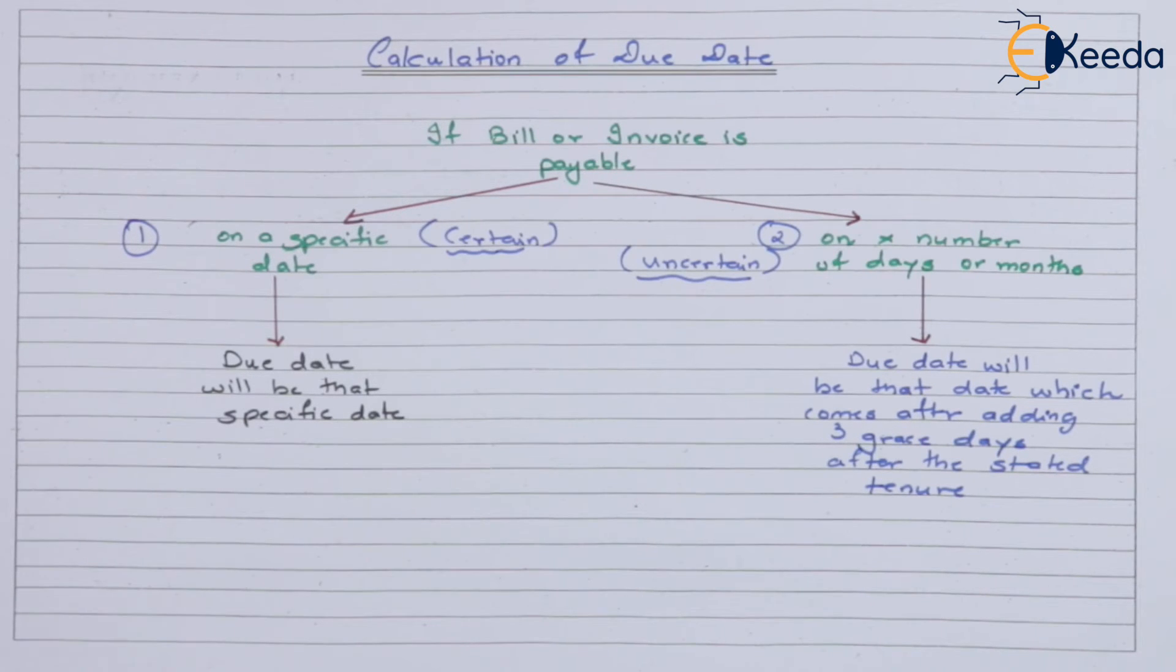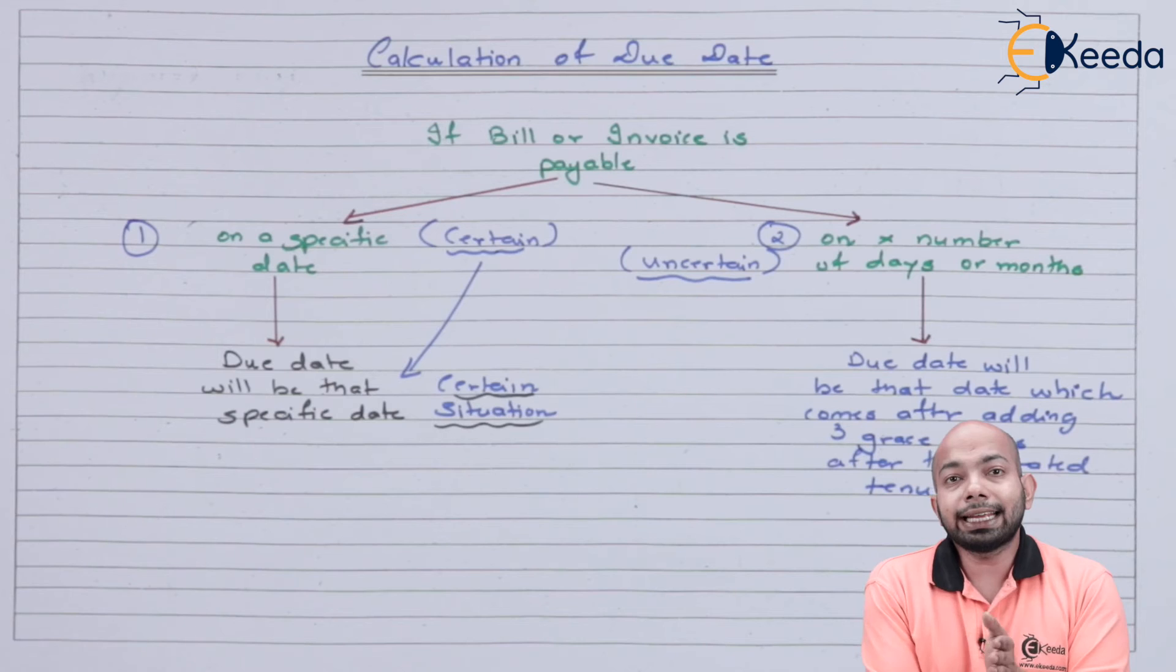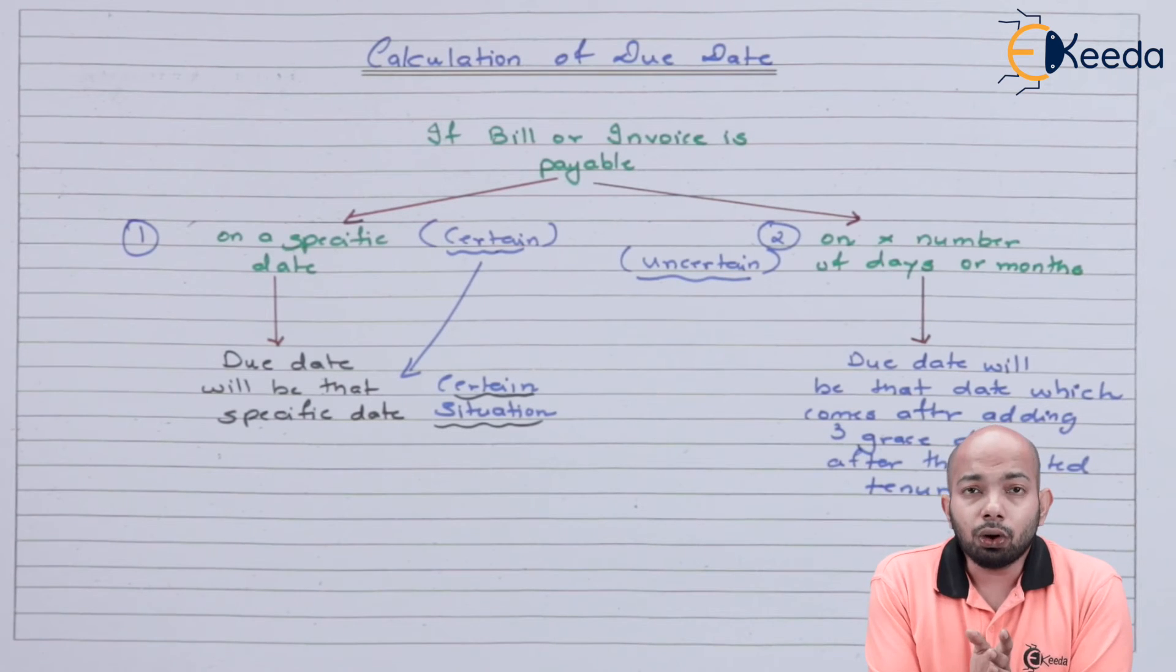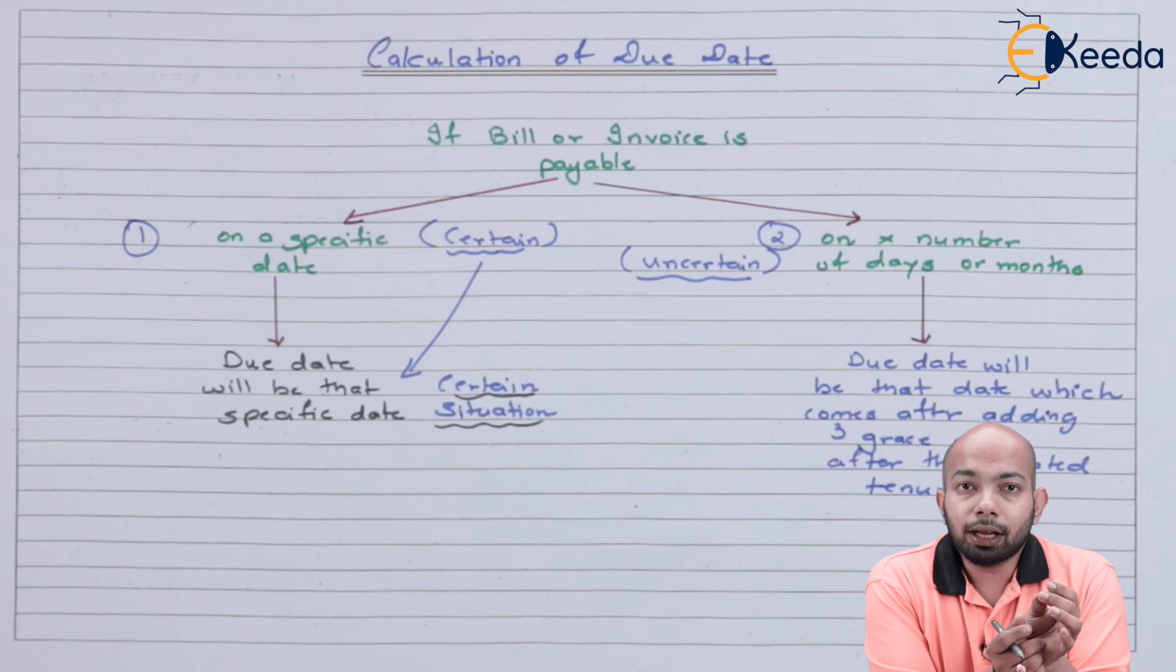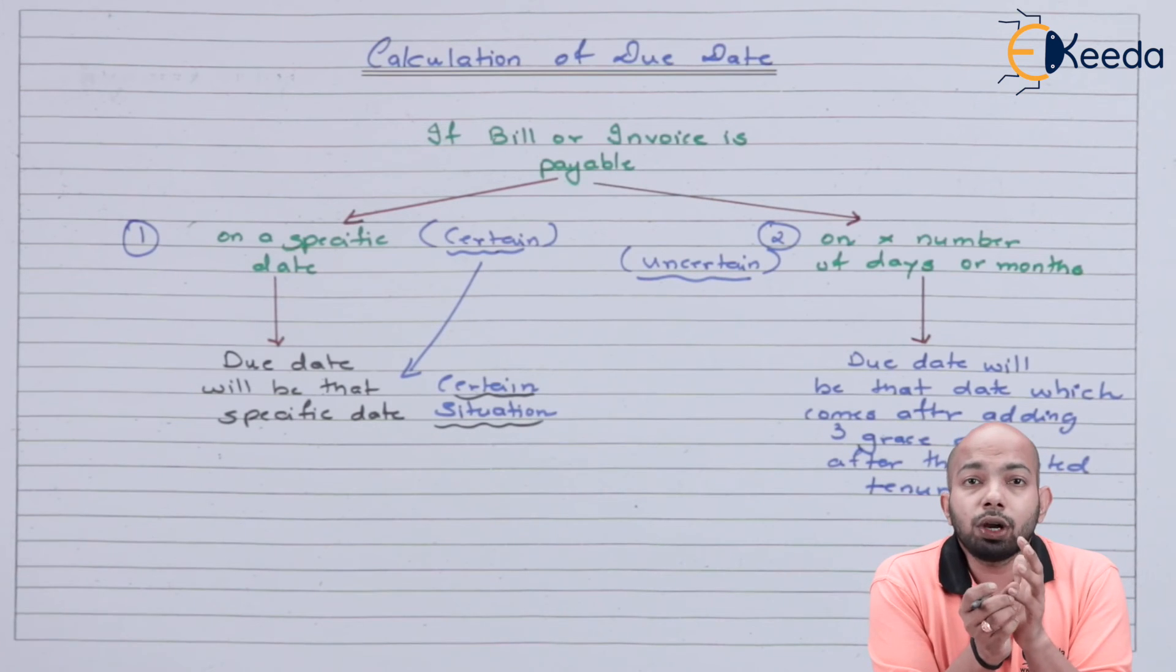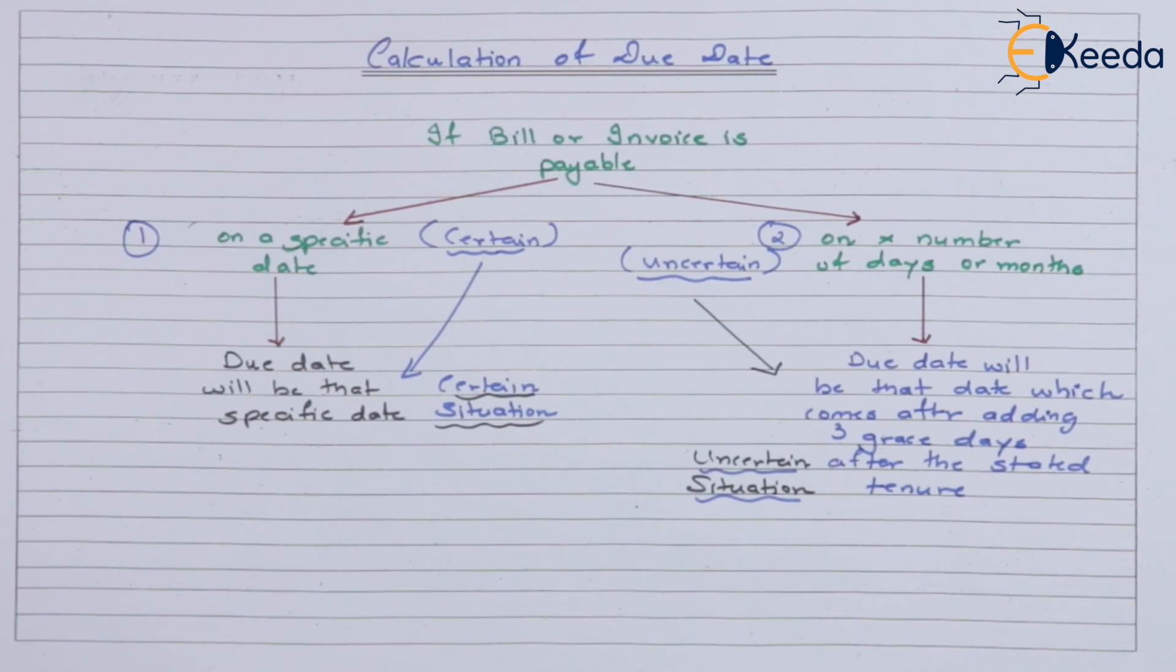Now whenever a certain situation comes up, the due date will be that specific date itself. So if you have decided that you will be paying it off on 16th of August 2019, 2020, that date will be your due date. However, in uncertain situation what you have to decide is what will be the exact due date. Let's consider you draw a bill on 1st of January 2019 and that bill is payable after three months. That means from 1st of January three months will be Jan first month, Feb second month, April third month. Once these three months are done, 1st of April should be your due date but that won't be the correct due date because whenever such uncertain bills are there you have to give a grace period of three days. So basically if you add three more days to this that means 2nd, 3rd and 4th, so 4th of April will be the actual due date here.